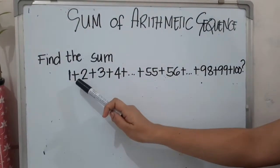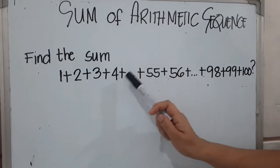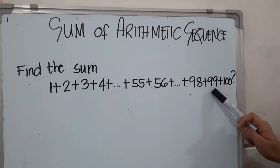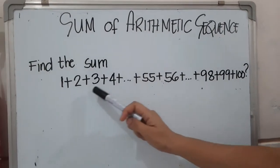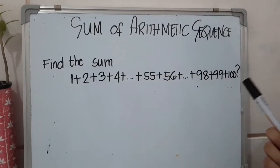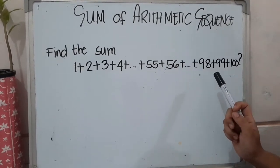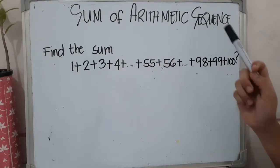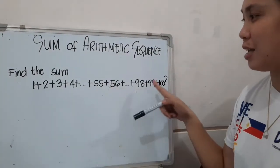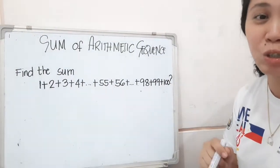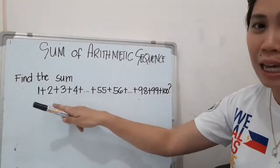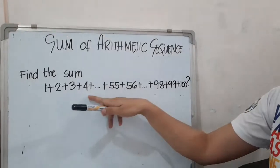This kind of problem was introduced by an elementary teacher to his pupil, and within seconds the pupil was able to find the correct answer. Do you know who that person is? He is none other than Karl Friedrich Gauss. Yes, within seconds he was able to find the sum of this sequence.